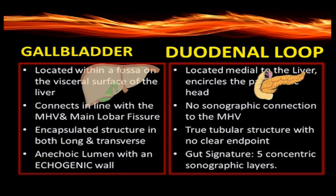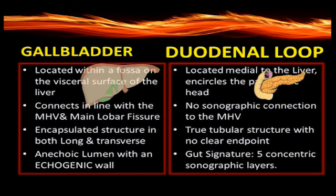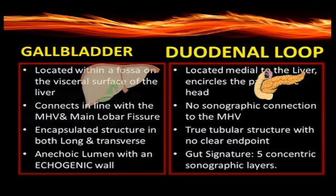The gallbladder connects in line with the middle hepatic vein and main lobar fissure, and we can use these anatomic structures to track our way to the true gallbladder fossa. With the duodenal loop, there is no sonographic connection to the middle hepatic vein.